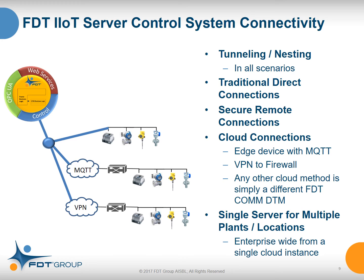Another interesting aspect of this architecture is that today FDT is typically deployed in a single instance for a single facility. But with cloud-based and fog-based applications, it's very likely that a single installation would support an entire enterprise from the cloud. This works with all scenarios and all features are maintained. All communications are highly secured as described, and we can accommodate any number of industrial networks and any number of plants with this architecture.